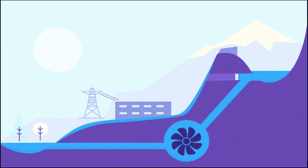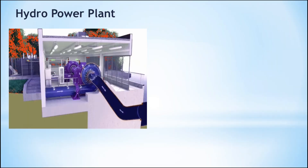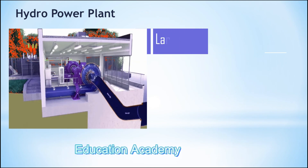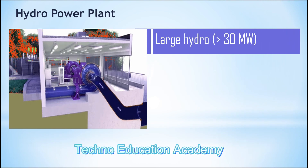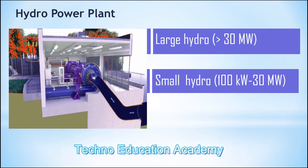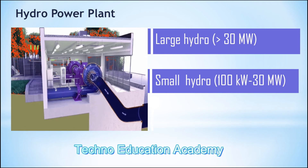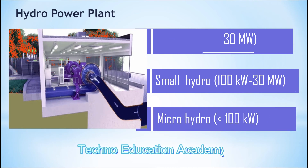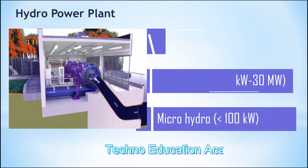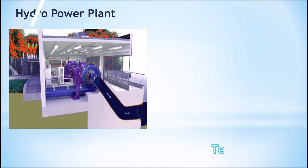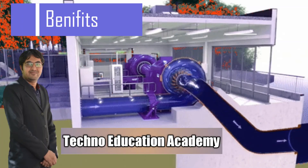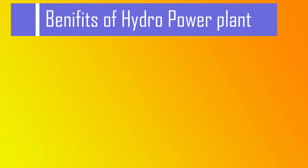There are various sizes of hydropower plant that produce electricity: large hydro is greater than 30 megawatts, small hydro is between 100 kilowatts and 30 megawatts, and micro hydro is less than 100 kilowatts. Hydropower plants are among the best from many viewpoints and offer several benefits.